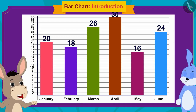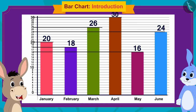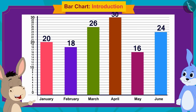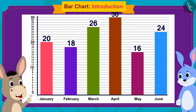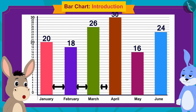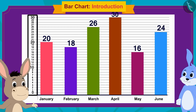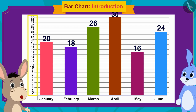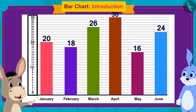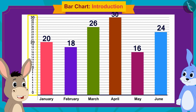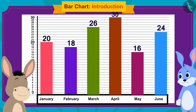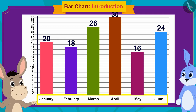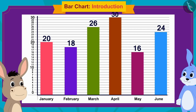Bholla said, 'Look Bunny, our bar chart is ready! The height of each bar shows the amount saved in that month. As you can see, the bars are rectangles of exactly the same width and the space between them is also equal. On the vertical line I have written equally spaced numbers from 1 to 30 to show the amount saved, and on the horizontal line I have written the names of the months.'